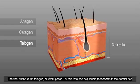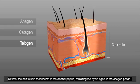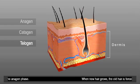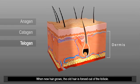The final phase is the telogen, or latent phase. At this time, the hair follicle reconnects to the dermal papilla, restarting the cycle again in the anagen phase. When new hair grows, the old hair is forced out of the follicle.